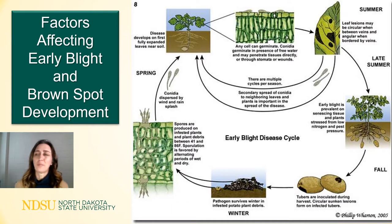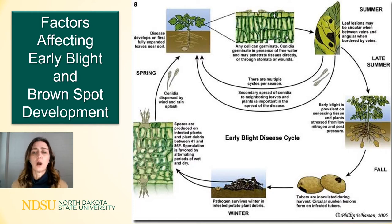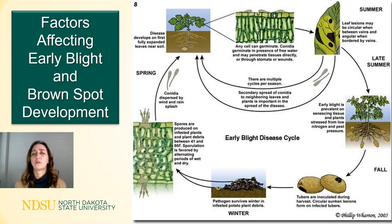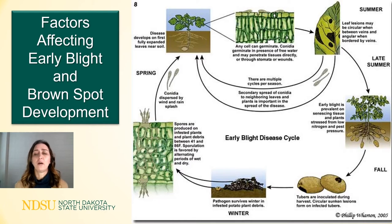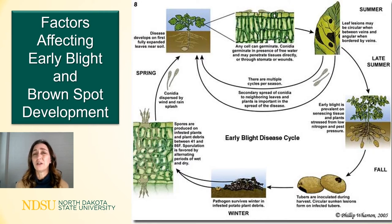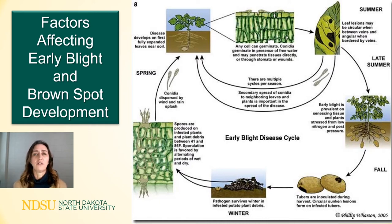The disease cycle for early blight and brown spot are basically the same. Starting in the upper left-hand corner of this diagram, spores are produced mainly on plant debris from the previous season and are carried by wind in the spring. The small-spored Alternaria species don't tend to travel as far as Alternaria solani. Spores are produced under a wide temperature range, from as low as 5°C to 30°C, but alternating wet and dry periods favor spore formation. Free moisture is required for spore germination and infection, which can occur in as few as eight hours, and the amount of sporulation increases with increasing duration of that wet period.